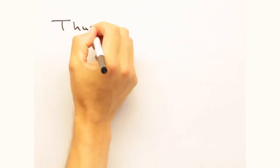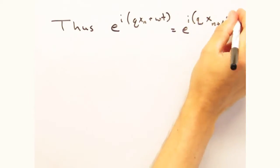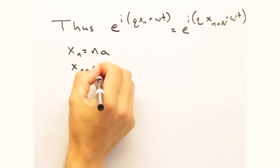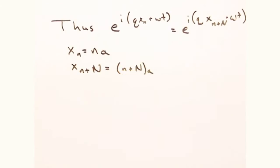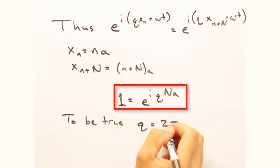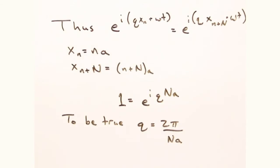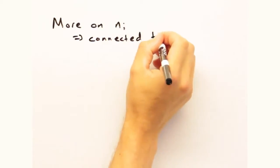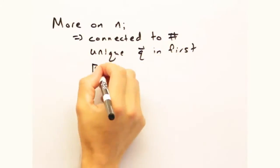So for that to be true, our exponential terms for n and n plus capital N must be equal. Dividing out e to the i omega t term, we're left with e to the i q n a equals 1. And by inspection, our Q vectors must be equal to 2 pi over capital N times A, all of that times an integer we denote as n sub i. This integer n i is fairly important because it denotes how many modes we have in the crystal.